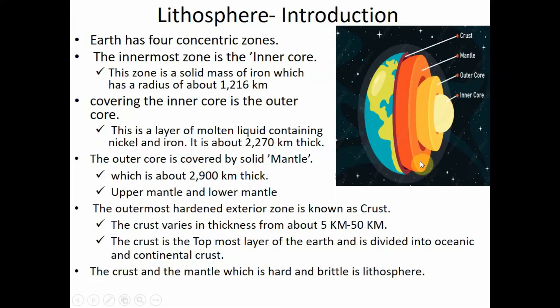The outer core is covered by a solid mantle which is about 2900 kilometers thick. The solid mantle is divided into two: the upper mantle and the lower mantle. This mantle exists in a semi-solid state. The outer hardened exterior zone is known as the crust, which varies in thickness from 5 kilometers to 50 kilometers.